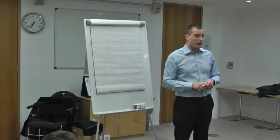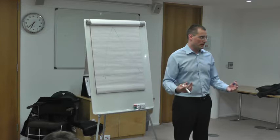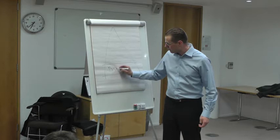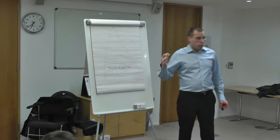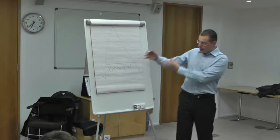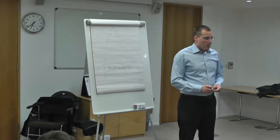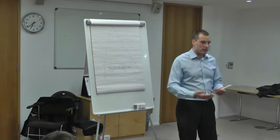Maslow was trying to understand why people struggle to make money all their life but when they do, they're not happy. He said there are multiple levels of human needs. On the bottom level of the pyramid are physiological needs — air, water. He said enough is enough: more air than you need doesn't increase your quality of life, and more water than you need is a flood.